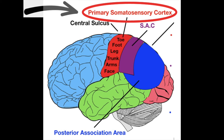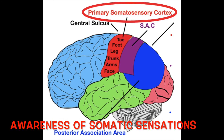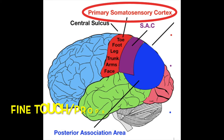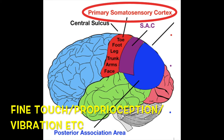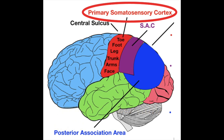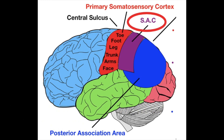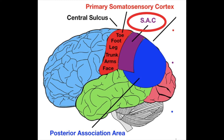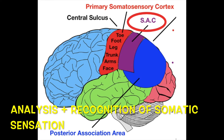The primary somatosensory cortex deals with awareness of somatic sensation — fine touch, proprioception, vibration, pressure, pain, and temperature. The somatosensory association cortex deals with analysis, processing, and recognition of those somatic sensations by comparing them to previous memory.